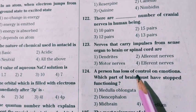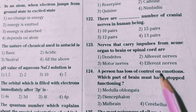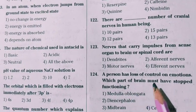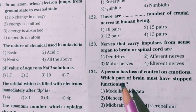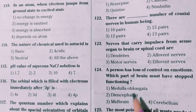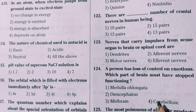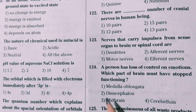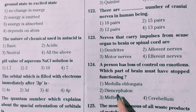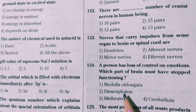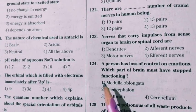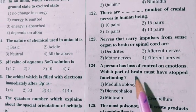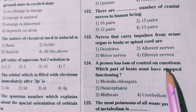Next question: a person has loss of control on emotions — which part of the brain must have stopped functioning? Among the different parts of the brain, diencephalon is the part of the brain which, when damaged, causes a person to lose control on emotions.